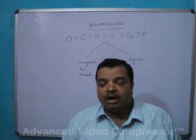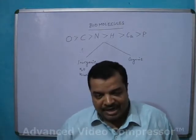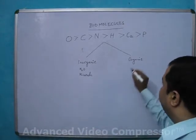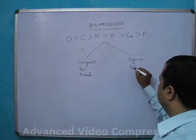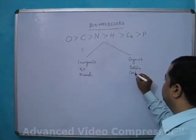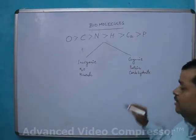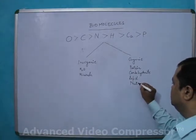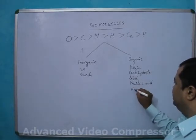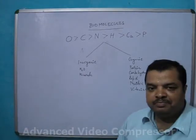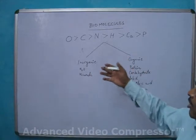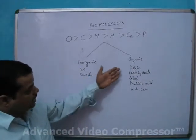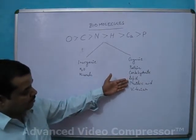And what are the organic molecules? Organic molecules are carbohydrate, protein, lipid, nucleic acid, and vitamins. So this bifurcation shows that biomolecules may be inorganic — examples: water and minerals — or organic — examples: protein, carbohydrate, lipid, nucleic acid, vitamins.